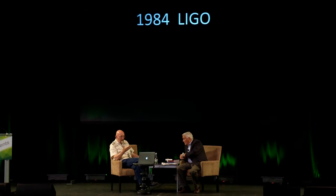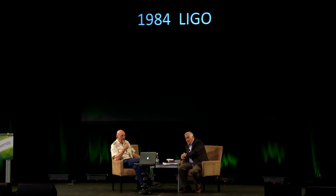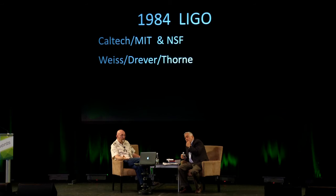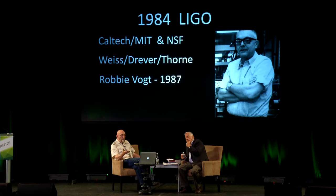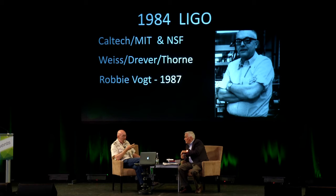In 1984, Ray Weiss, Ron Drever, and I at Caltech created LIGO as a collaboration between Caltech and MIT and the National Science Foundation. Then we brought on Robbie Vogt at Caltech to direct us in 1987, because we had tried to run this as a troika leadership — trying to run a big project by consensus, which you can't do. We got burned by our ineptness at running it, so we brought on Robbie, who knocked heads together and led us in writing a construction proposal in 1989.